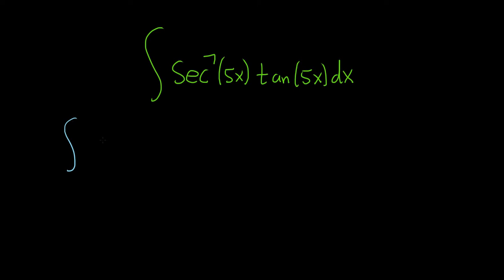Well that means basically we have to factor out a secant from the secant to the seventh. So it'll be secant to the sixth of 5x and then we'll pull out a secant. So it'll be secant 5x tangent 5x dx.